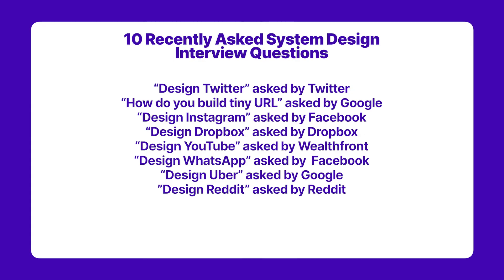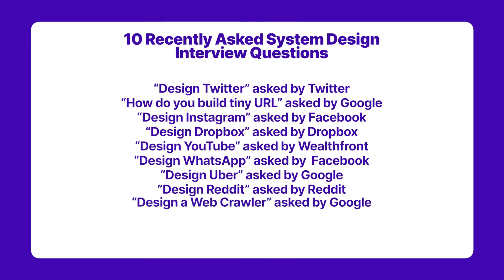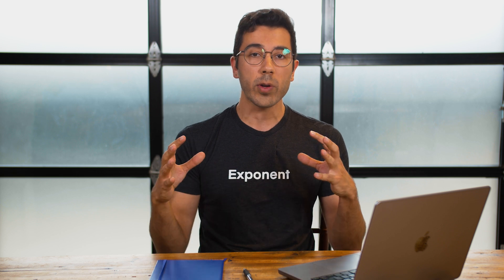The last two recently asked system design interview questions are design a web crawler, which was asked at Google, and design Airbnb search, which was asked at Airbnb. These questions are nuanced and different from the others in that they're more focused on a subset of the actual product experience, as opposed to building the entire product end-to-end.